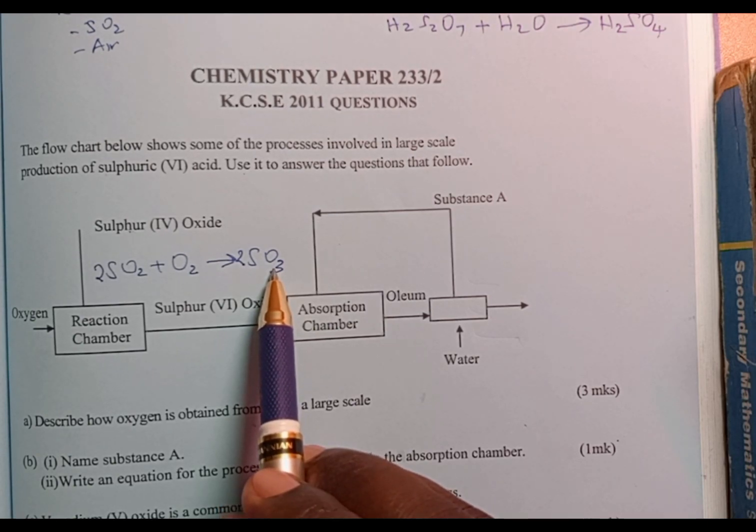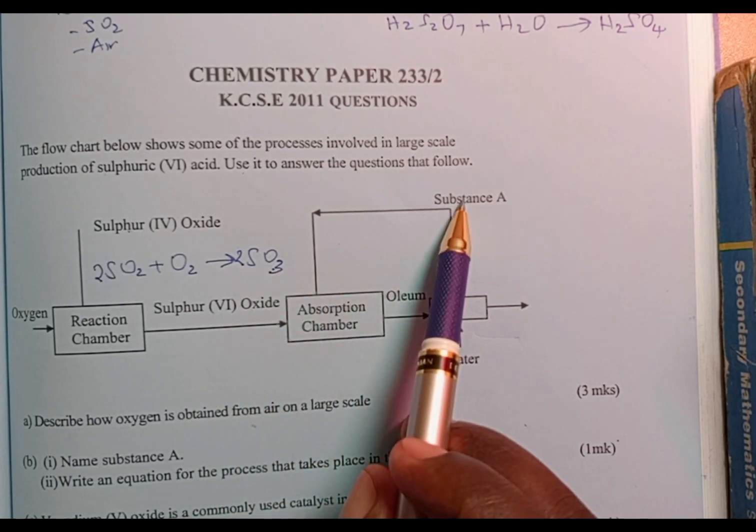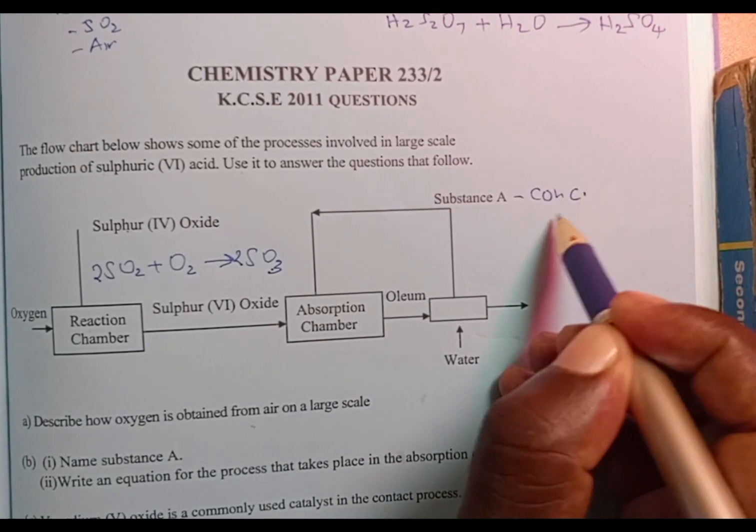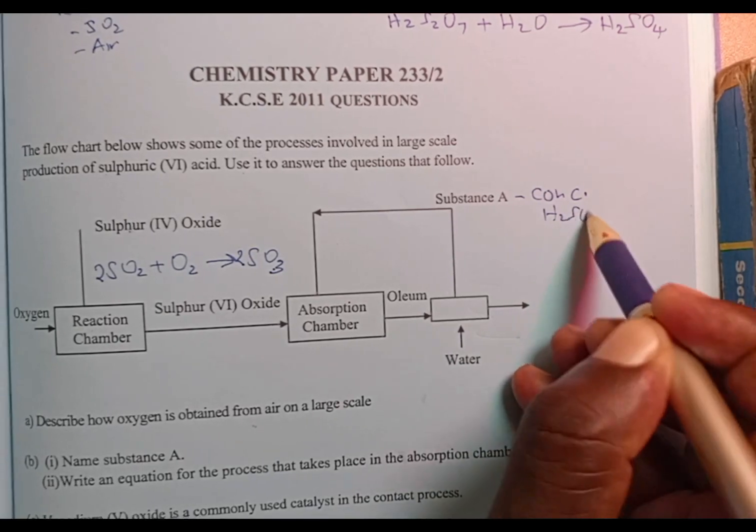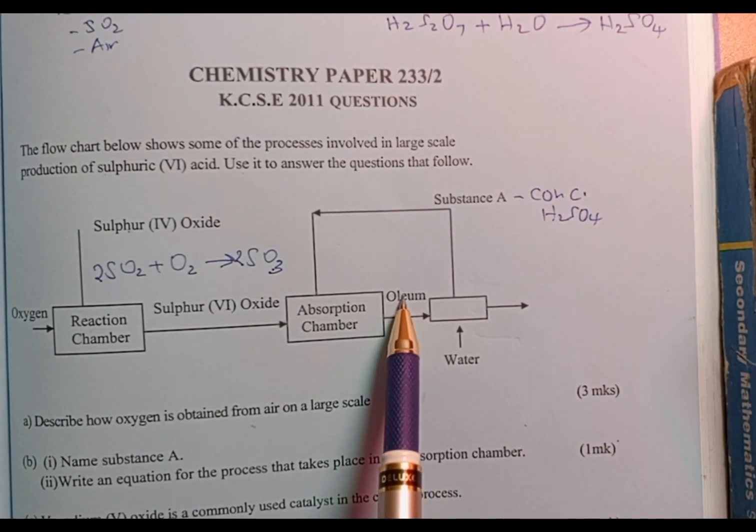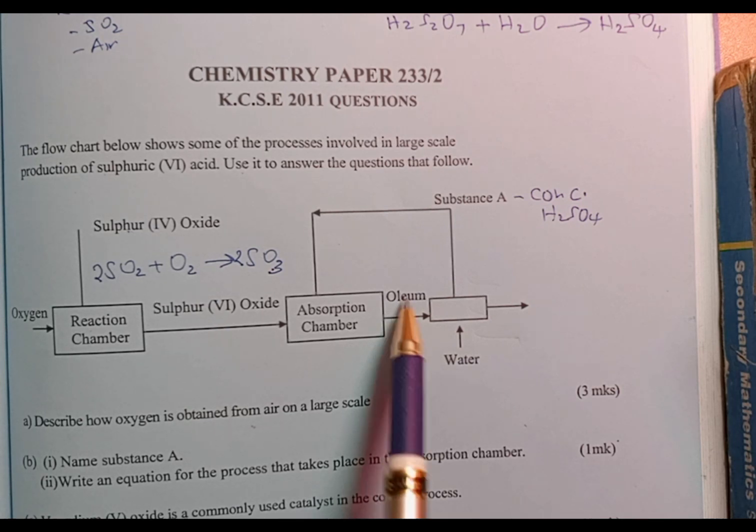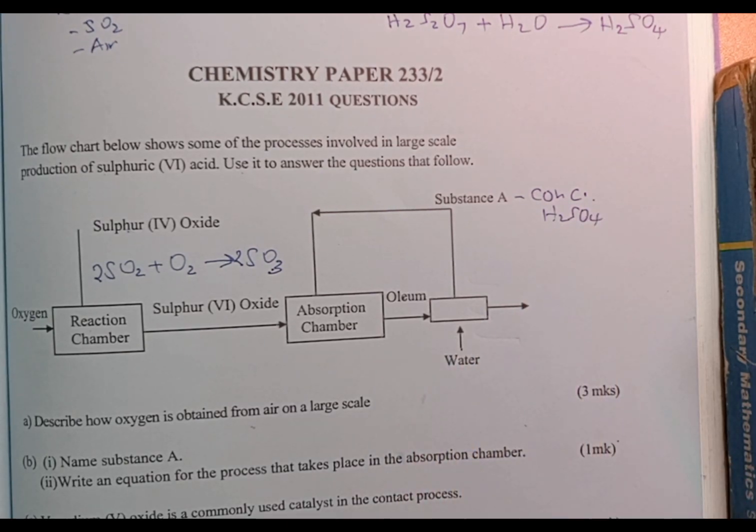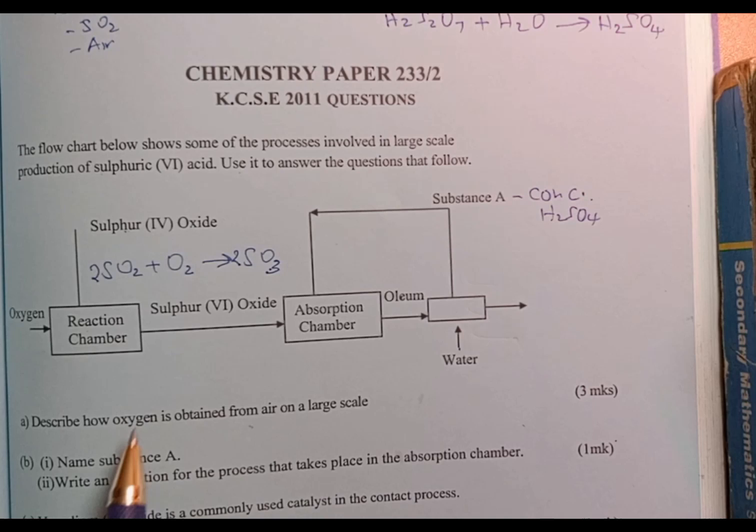Then once we have sulfur trioxide, we dissolve it in substance A, which is concentrated sulfuric acid to produce oleum. Then oleum is reacted or diluted with water to form concentrated sulfuric acid. We can now go through the given questions.